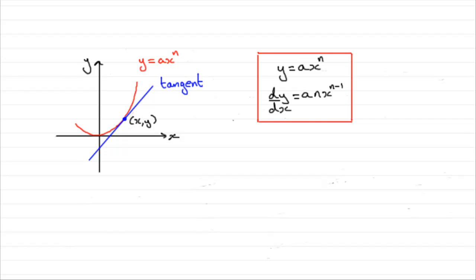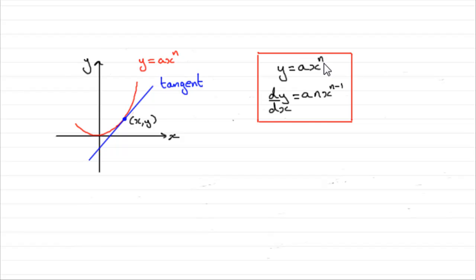In an earlier tutorial, what I showed you was that if you had a curve of the form y equals ax to the power n, then we could work out the gradient of the curve at any point xy — which was given as the gradient of the tangent — by what was called the gradient function. It turned out to be an x to the power n minus 1. What I want to do in this tutorial is show you how we derive this type of formula from terms of the form ax to the power n. It's often referred to as differentiation by first principles.